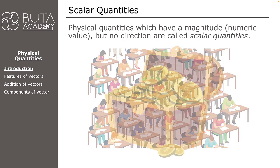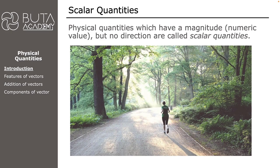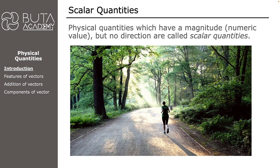Another example is the amount of money we have — we don't need to specify any direction to say we have 25 rand to spend in a tuck shop. Running five kilometres each morning is enough to express that we are trying to have a healthy lifestyle, and we don't need to specify which direction we are running. As a result, the number of learners in a class, the amount of money we have, or a distance we cover each morning are all scalar quantities — we can express them without mentioning any direction.